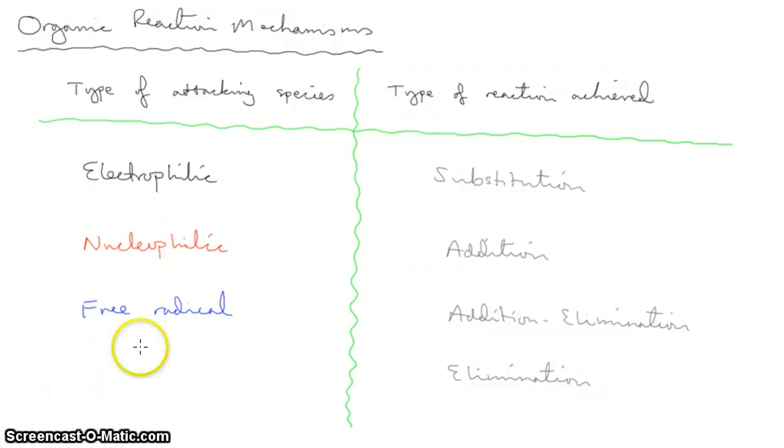Now, in terms of what options you have: electrophilic reactions at A-level. You can have electrophilic substitution—for example, with a benzene ring, all the reactions of benzene rings are electrophilic substitution. You can have electrophilic additions. These are the reactions of alkenes.